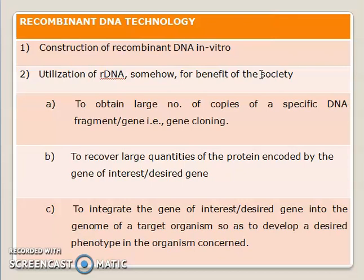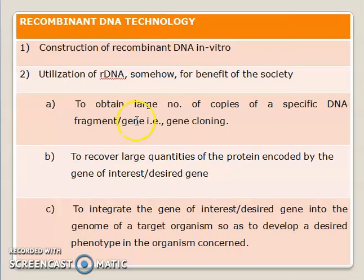So today we are going to have a little bit of an idea of how to utilize that recombinant DNA for the benefit of society. Basically there are three important objectives behind creating that recombinant DNA. The first objective, or the first way of utilizing the RDNA, is that it can be utilized to obtain a large number of copies of a specific DNA fragment or a specific gene, and that particular process is what is known as gene cloning.